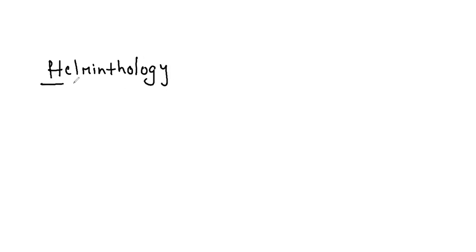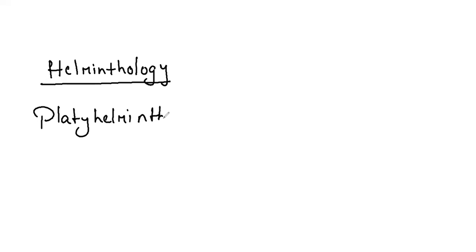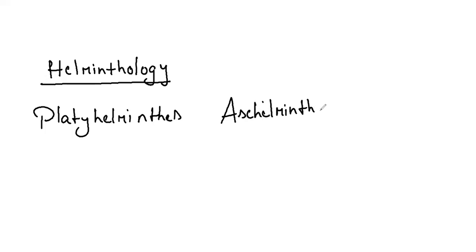According to the animal kingdom, we have three phyla which will be denoting regarding helminthology. The very first is platyhelminthes. The second is aschelminthes. And next, annelida.